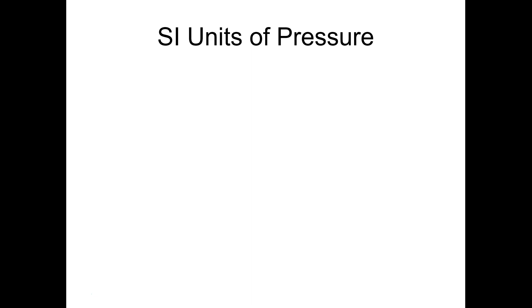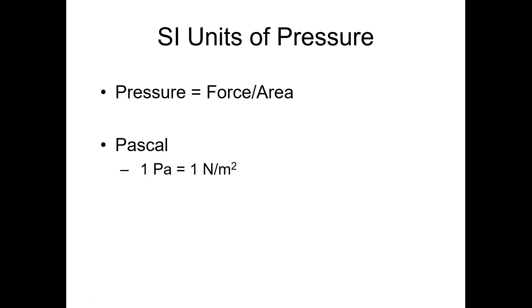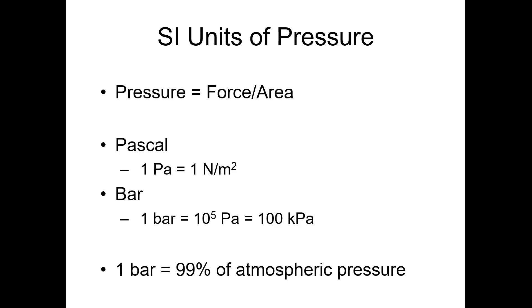Pressure is an SI unit because it's force per unit area. The SI unit of force is the Newton, and the SI unit of area is the square meter. So the Pascal is defined as one Newton per square meter, which turns out to be a pretty small unit. Because it's so small, we define the bar as 10 to the 5th pascals — that is, 100,000 pascals — and a bar is still slightly less than standard atmospheric pressure. As a result, we don't normally use these units in the laboratory.